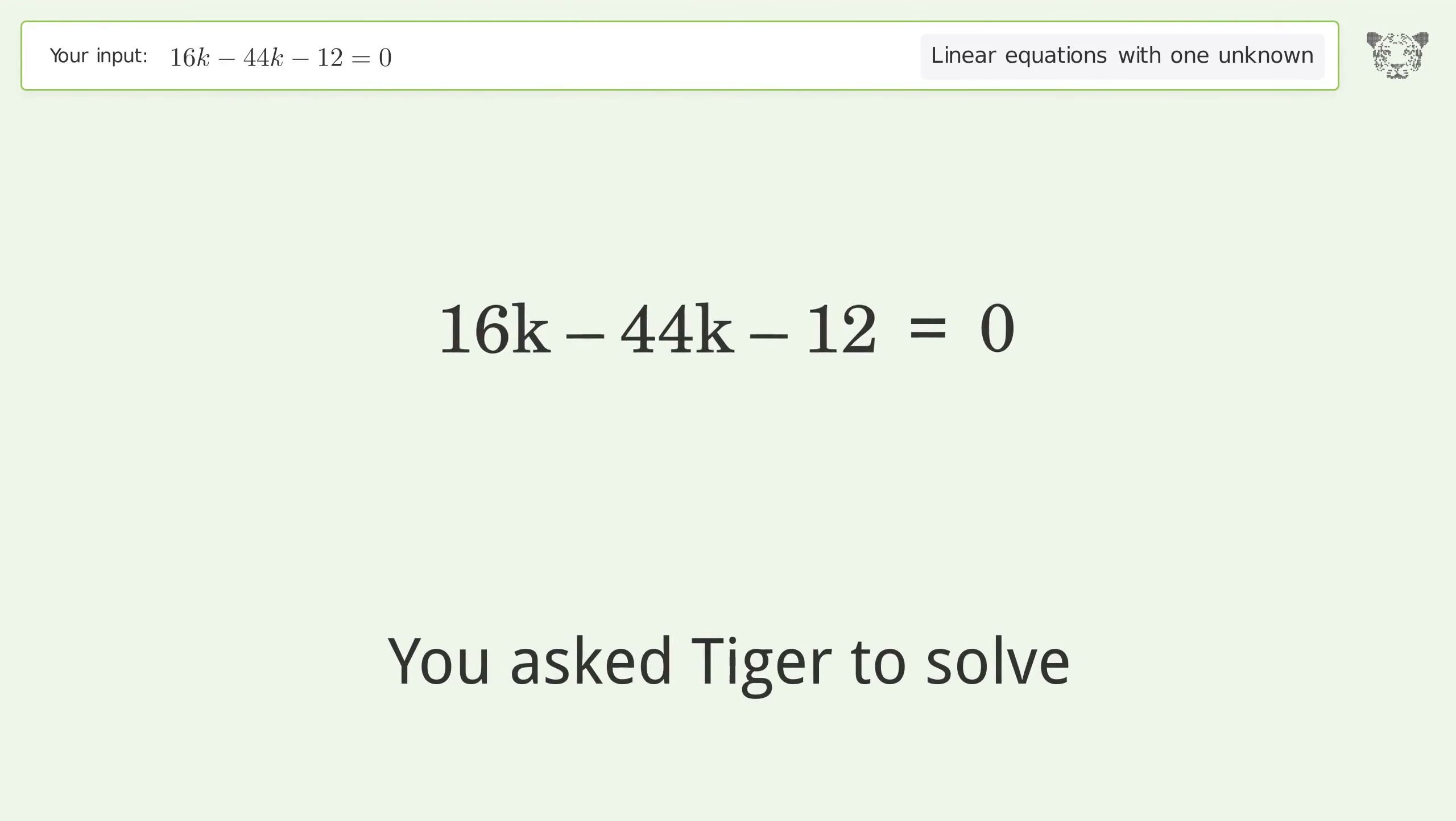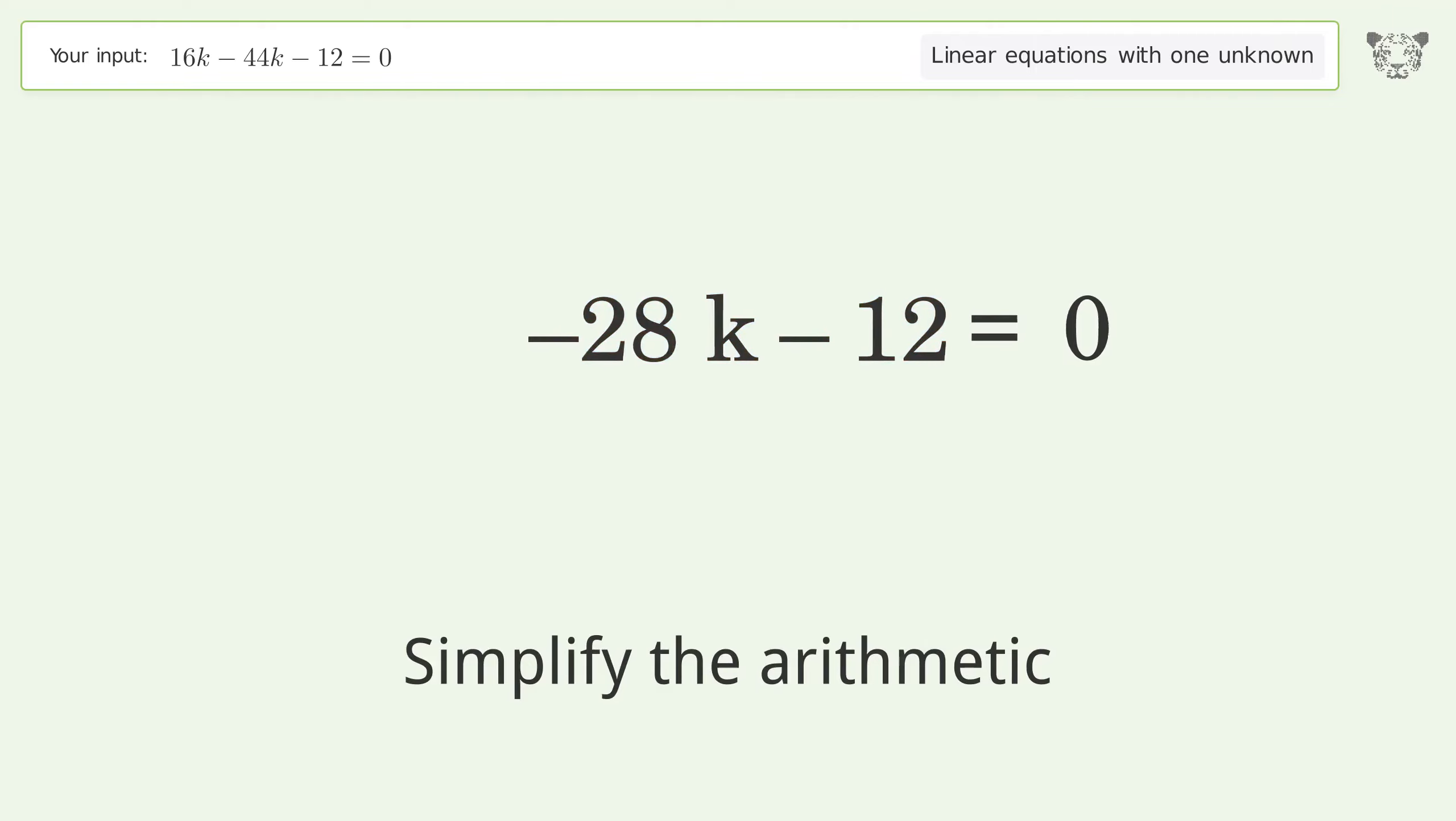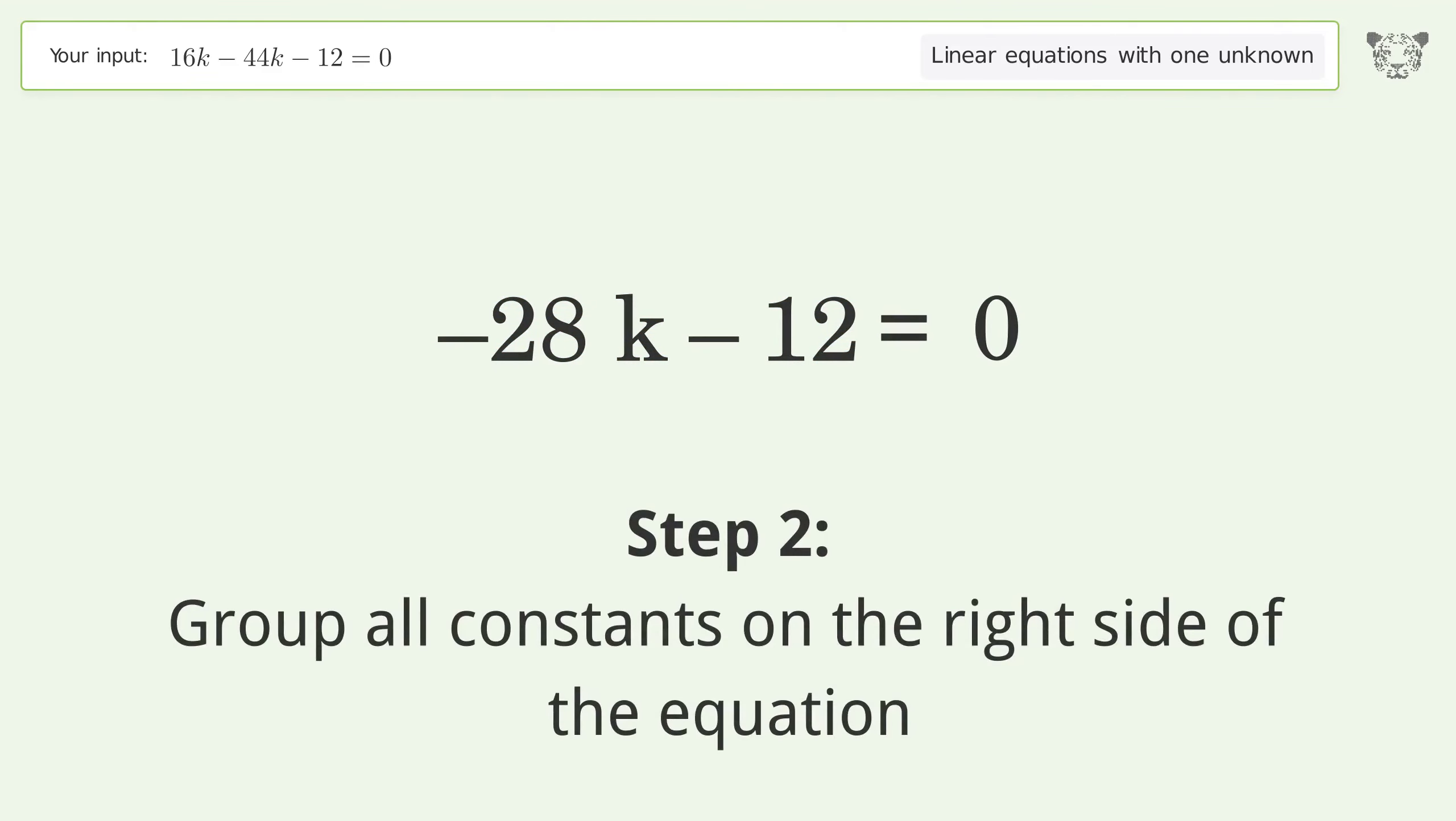You ask Tiger to solve this linear equation with one unknown. The final result is k equals negative 3 over 7. Let's solve it step by step. Simplify the expression, simplify the arithmetic, group all constants on the right side of the equation.